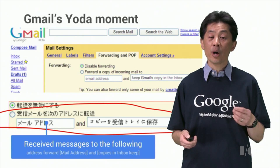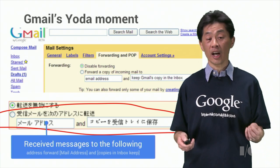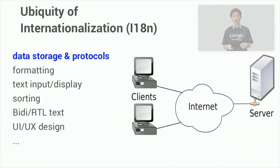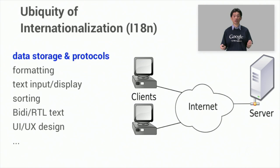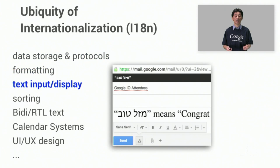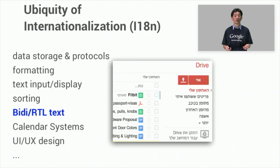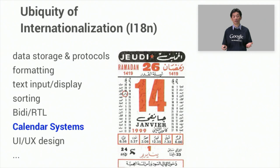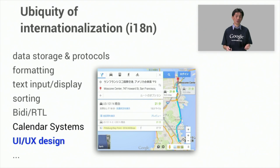Now let's look at a few other things that will help you internationalize successfully. Many assume that internationalization is just about translating all the strings in the UI, but it's really much, much more. It impacts back-end as well as front-end software — it affects the whole software stack, including data storage and protocols, formatting of dates, times, numbers and currency, entering and displaying of text, sorting, displaying bi-directional and right-to-left text for languages like Arabic and Hebrew, local calendaring systems, and of course your UI design and much more.